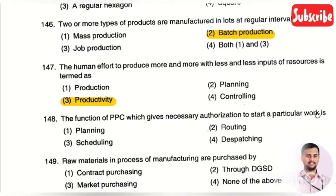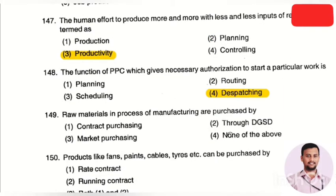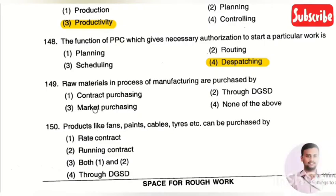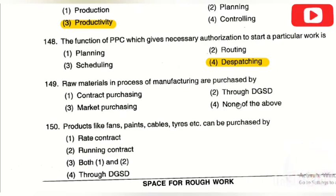The next question: the function of PPC which gives necessary authorization to start a particular work is — option 1: planning, option 2: routing, option 3: scheduling, option 4: dispatching. The right answer is dispatching. Next: raw materials in the process of manufacturing are purchased by — contract purchasing, through DGSD, or market purchasing. The right answer is market purchasing.